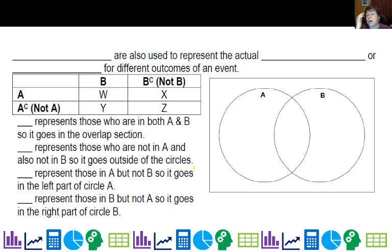Now another tool we can use are Venn diagrams to represent actual frequencies or probabilities. Here's a very generic Venn diagram, and I hope this helps you kind of keep it straight. So first of all, this is in A and B at the same time. So that's W, and it would go right there in the middle. Then we have represents those who are not in A, so that would be either Y or Z, and also not in B, so that must be Z, because that's the only one that's not in either one. And that would actually go outside of the two circles right there.